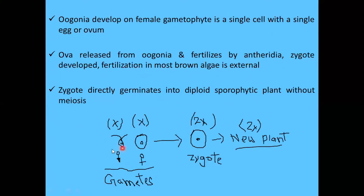As shown in the figure, the male gamete (antheridium) is smaller in size and motile, while the female gamete (oogonium or ovum) is larger and non-motile. Both are haploid. These two fuse together to form a diploid zygote, which directly germinates into a diploid sporophytic plant. This concludes sexual reproduction in brown algae.